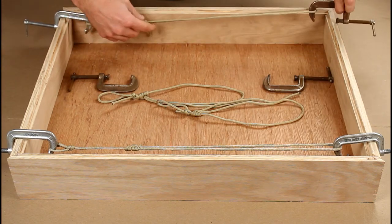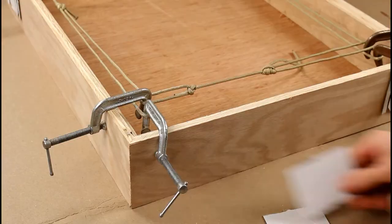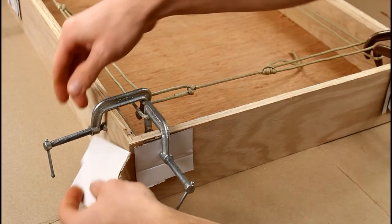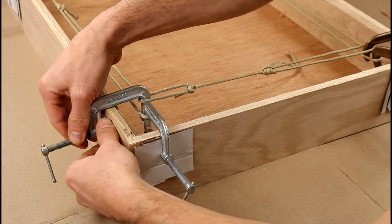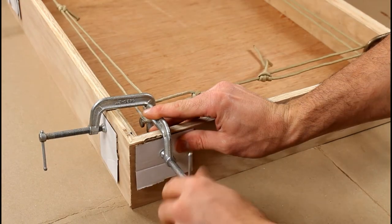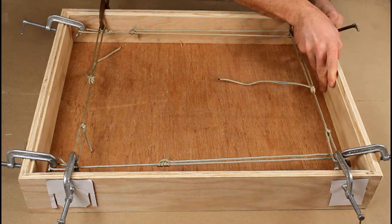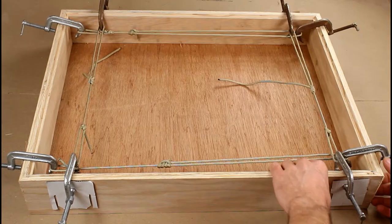Before you start tightening down on the C-clamps, it's a good idea to take a few pieces of cardboard and place them underneath the C-clamps so you don't make any small circular indentations within your box or frame. Move from one clamp to the next, checking every single corner, making sure everything fits together nice and flush, and making any minor adjustments as you move along.